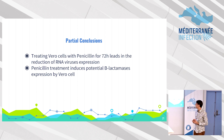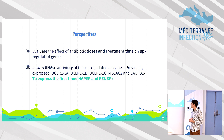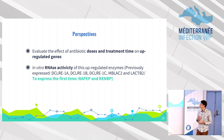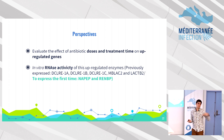As partial conclusions, treating Vero E6 cells with penicillin for 72 hours reduced RNA virus replication and induced expression of potential beta-lactamases. As next steps, we want to better understand the dose-response and time-course effects, work in vitro with the beta-lactamases that our collaborator Lucille expressed, and produce the two most up-regulated beta-lactamases — which have never been expressed here at IHU — as my next challenge. Thank you.